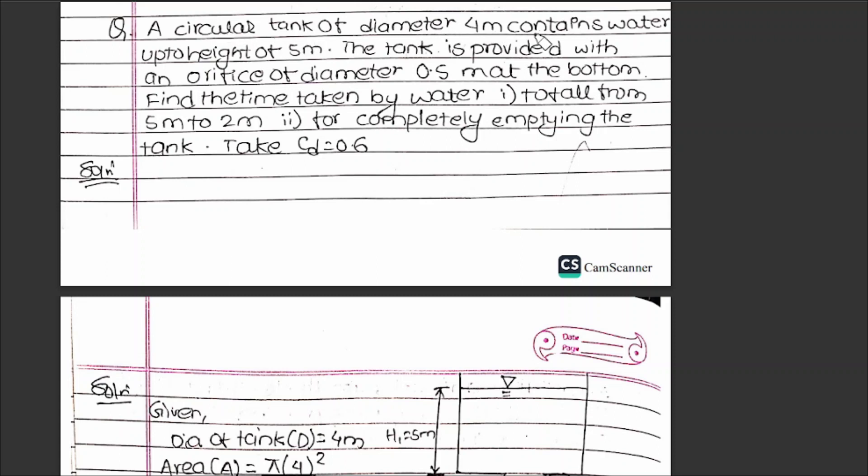Question: A circular tank of diameter 4 meters contains water up to a height of 5 meters. The tank is provided with an orifice of diameter 0.5 meters at the bottom. Find the time taken by the water to fall from 5 meters to 2 meters, and the time for completely emptying the tank. Take cd = 0.60.